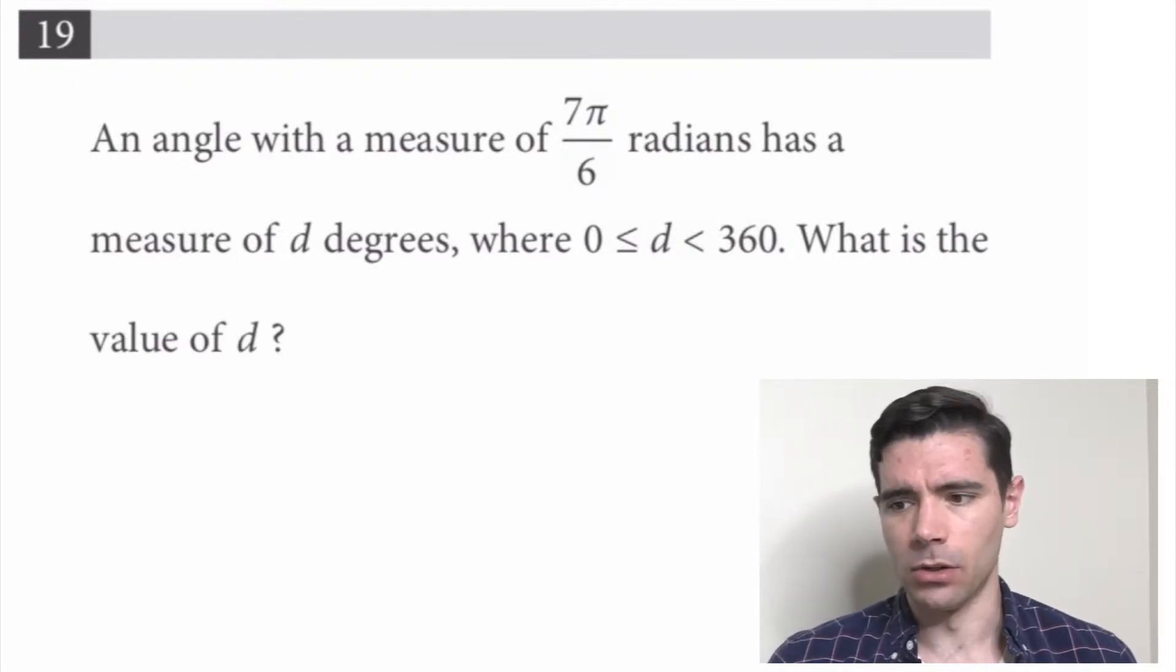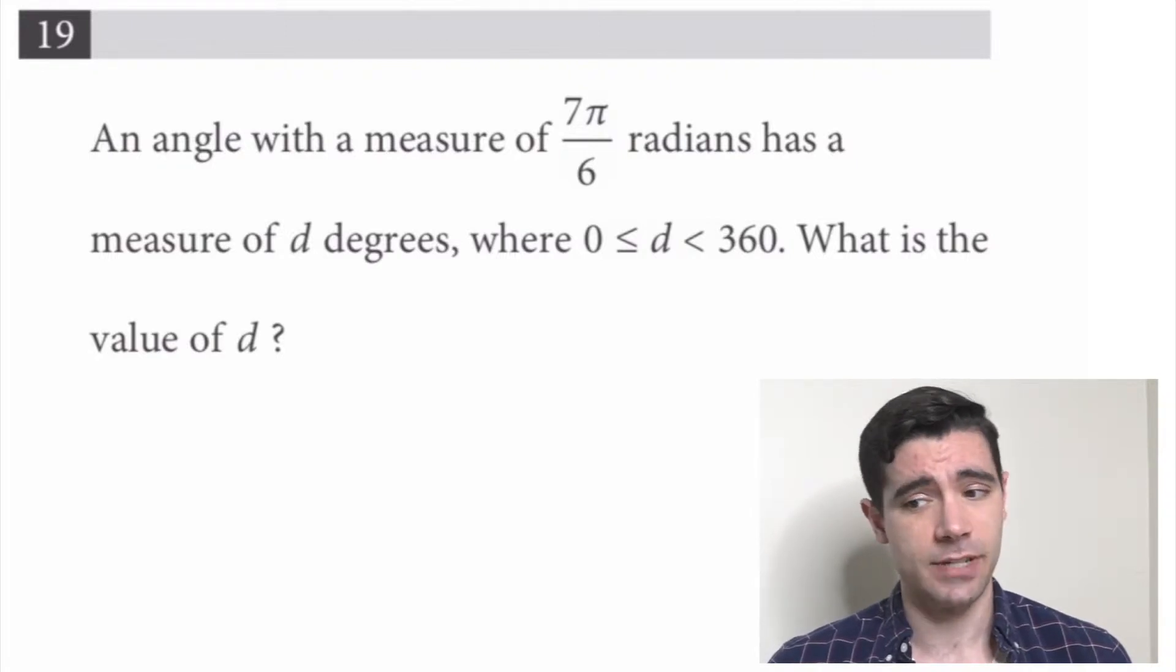It reads: An angle with a measure of 7π/6 radians has a measure of d degrees, where 0 is less than or equal to d, which is less than 360. What is the value of d?